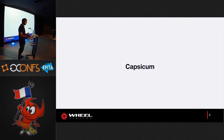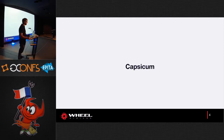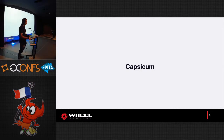In the dark ages of computer science, processes had something called ambient authority, which means they had access to every single thing in the computer. They could create connections to whatever they wanted, open any files from disk. There are some restrictions about users, but mainly the process can do anything it wants.